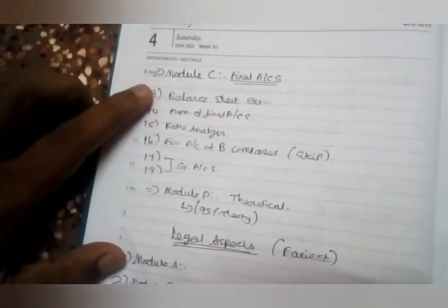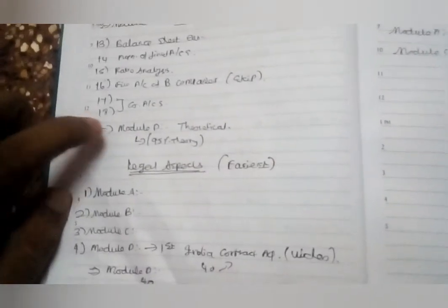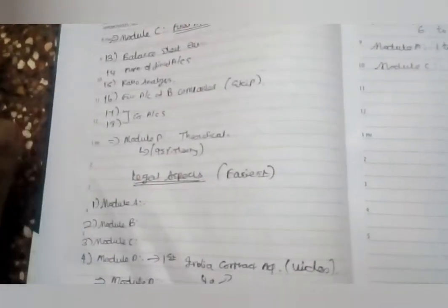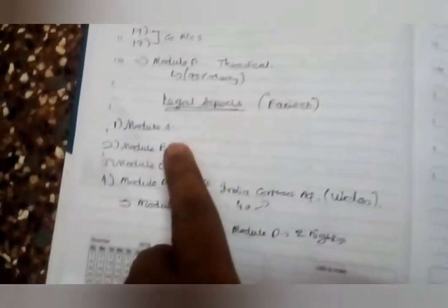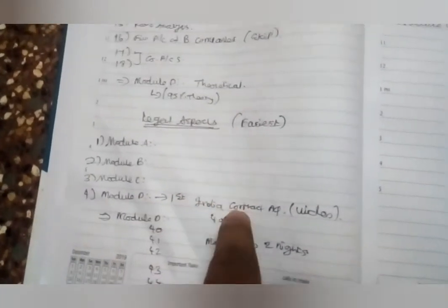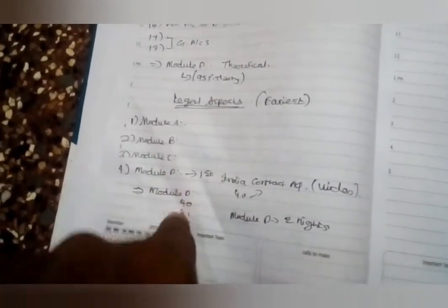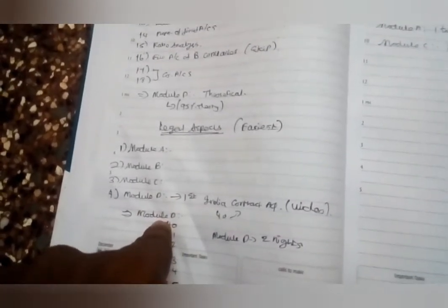In the account, there are 95% theoretical, so it is easy to do. The basic concepts are that you can search on YouTube. You can search on the headings of YouTube. If you look at the legal aspects, the easiest subject is JAIIB. This is the order preference.